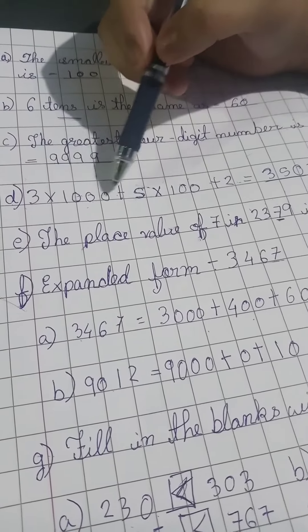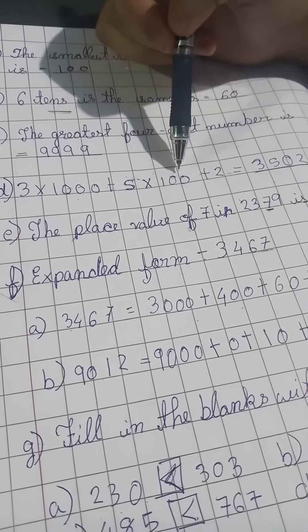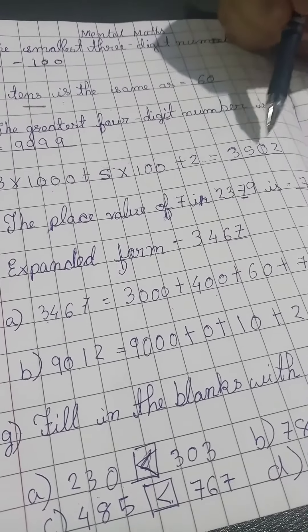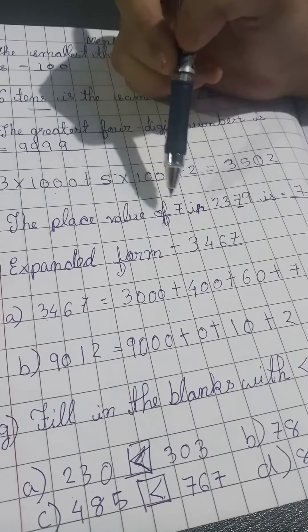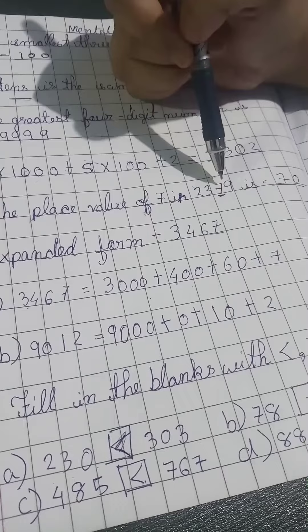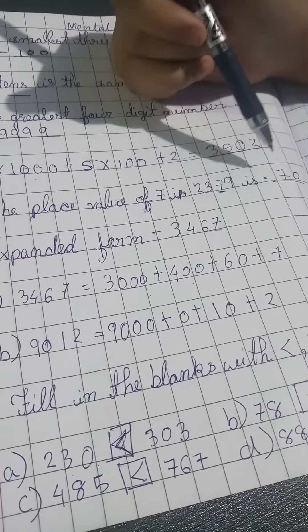3 into 1000 plus 5 into 100 plus 2 is equal to 3502. The place value of 7 in 2379 is 70.